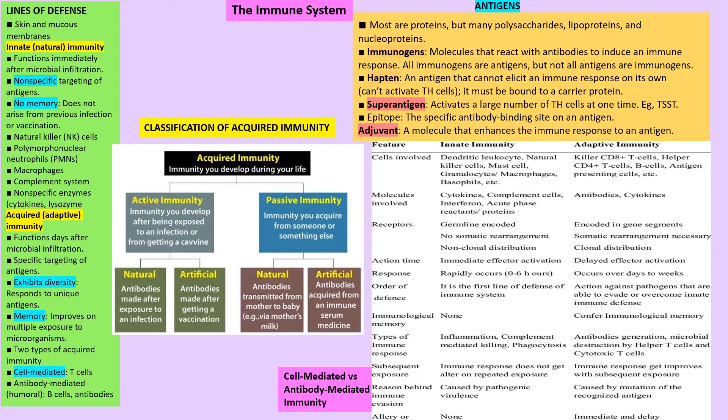We can see some definitions here of immunogen, hapten, and epitope that you can go through. There is also a good table showing different cells involved in innate immunity and adaptive immunity that you can review.